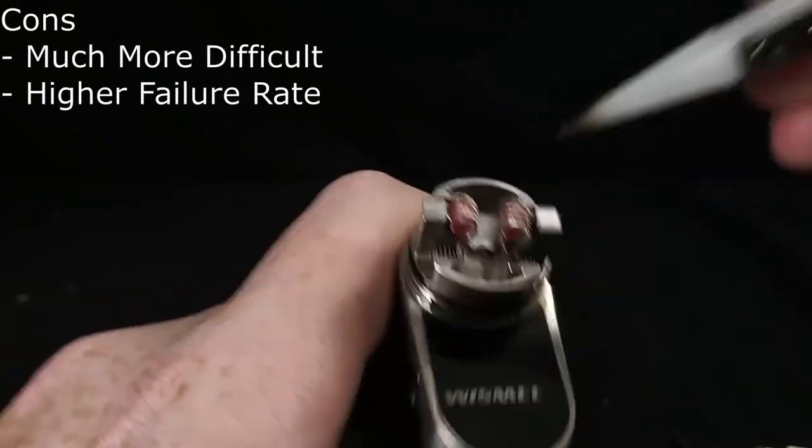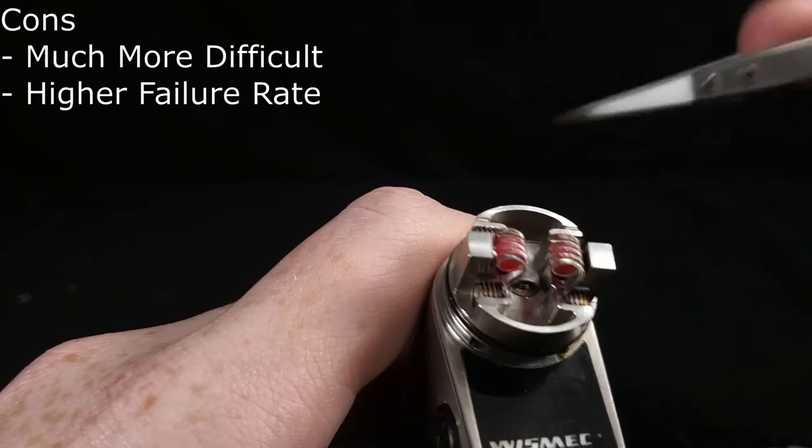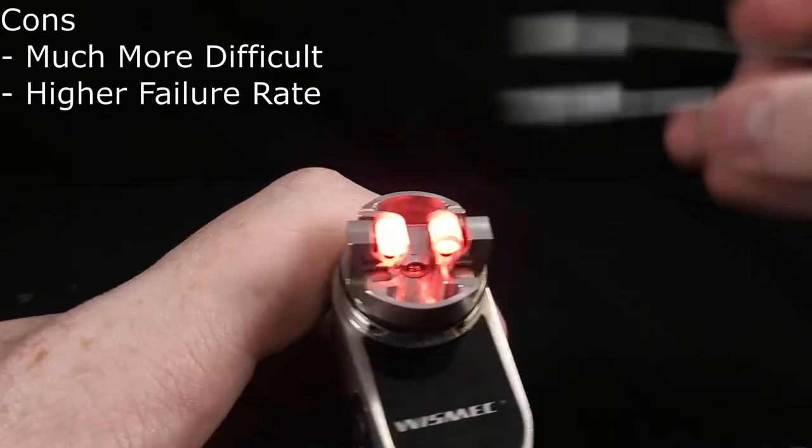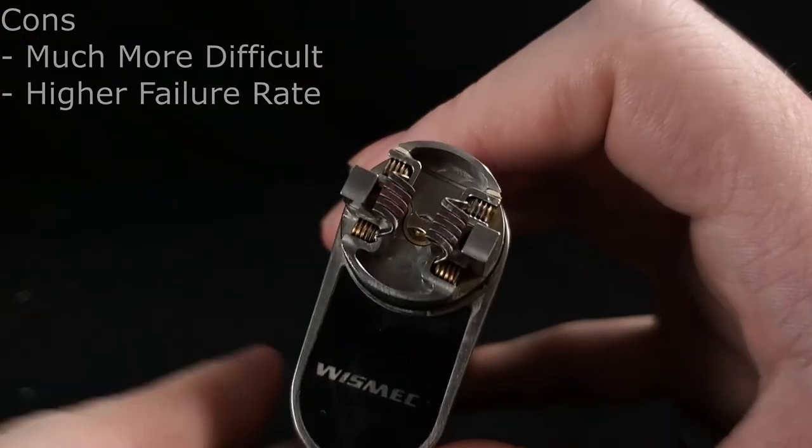The main con being working with ribbon wire is much more difficult and it takes more time and precision to do, as well as much more prone to failure, and the wrapping process itself is much more difficult.